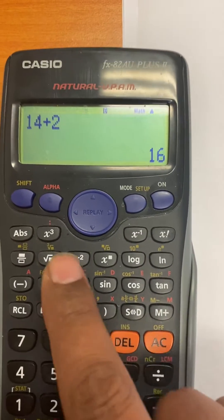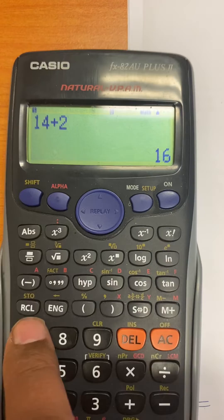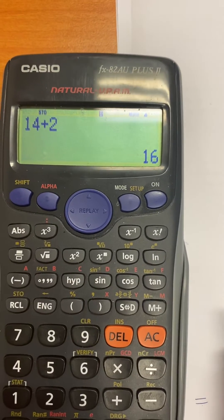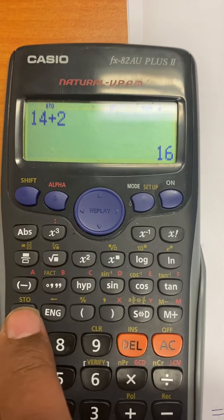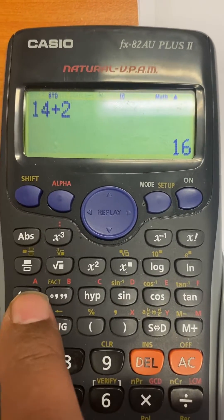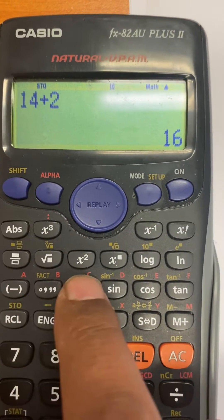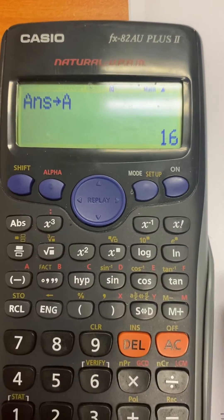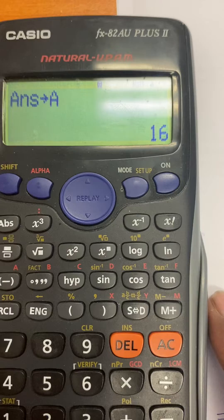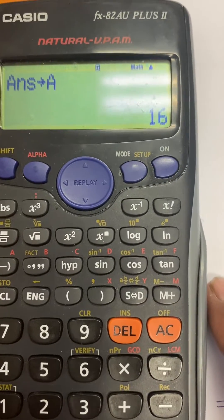So what you can then do is press shift and then press the recall tab. That means now you have put it in the memory and you give it a letter, you denote a letter to it. So you can see on top here A, B, C, D, E, F written, so you just give the letter A to it. That means now 16 as a number is stored in your calculator and you can recall it by recalling the letter A.